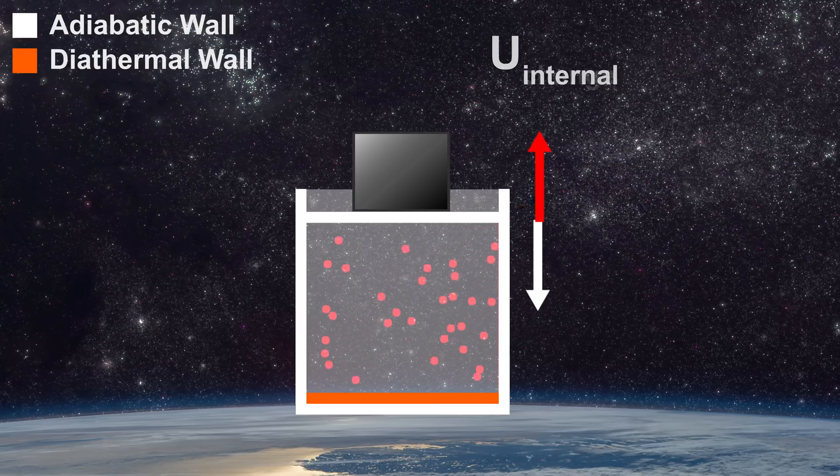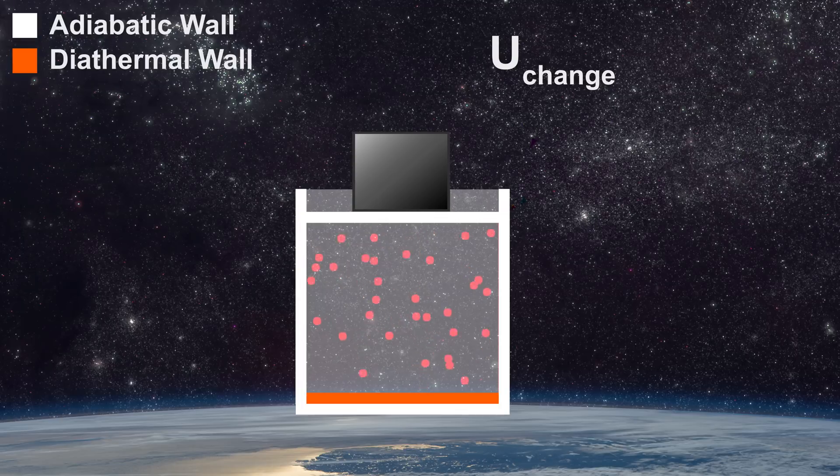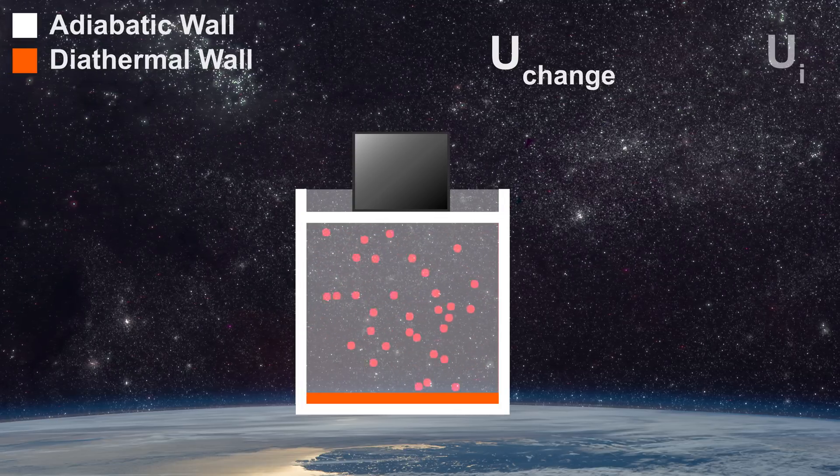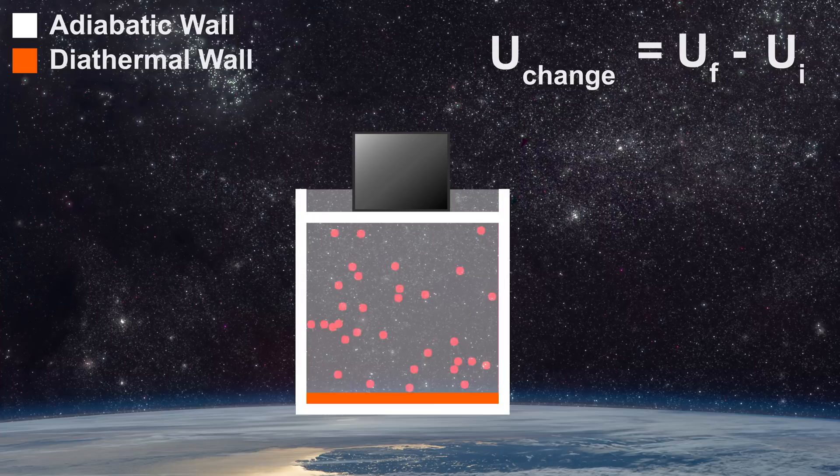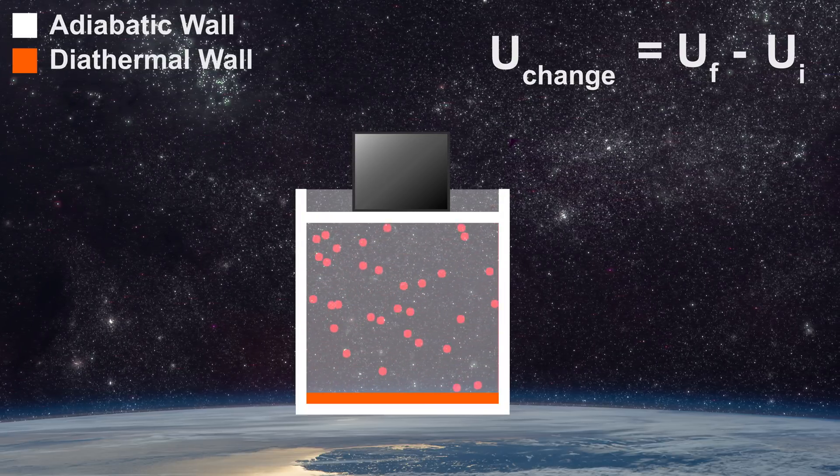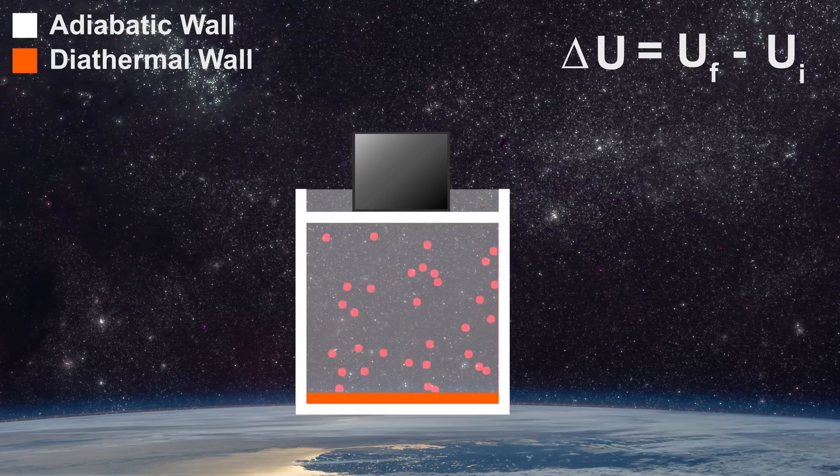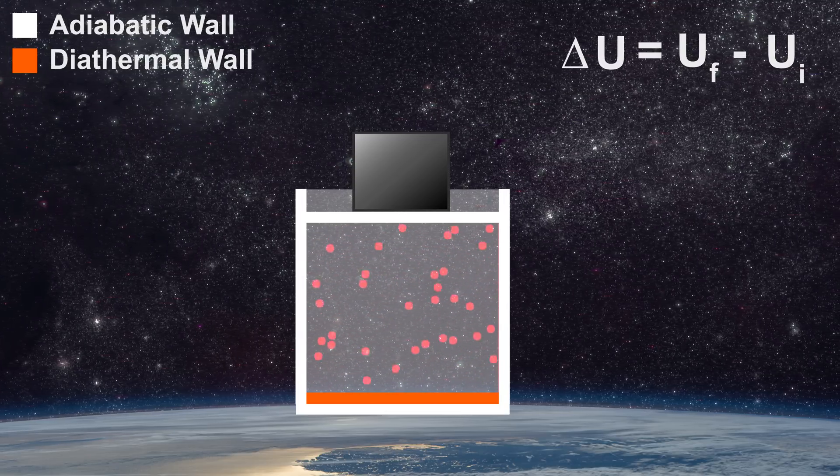If the system experiences a change, then its internal energy will change. By subtracting the initial internal energy U sub I from the final internal energy U sub F, we know how much change occurred. Mathematically, change is written as the Greek letter delta. Therefore, delta U represents a change in internal energy.